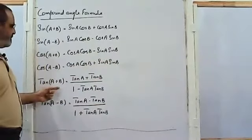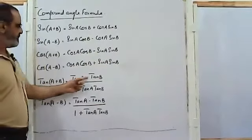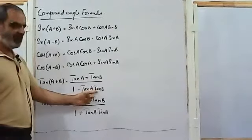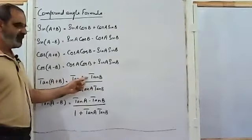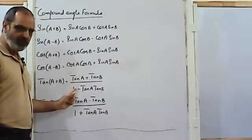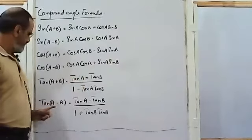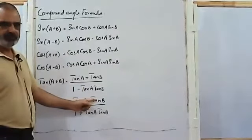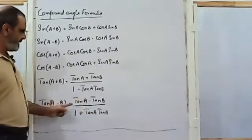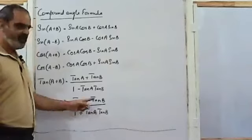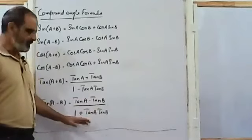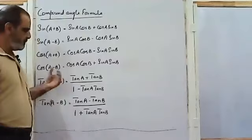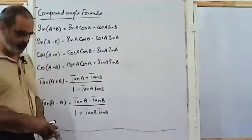Tan(A plus B) will be (tan A plus tan B) over (1 minus tan A tan B). For the plus sign we have a plus sign in the numerator and a minus sign in the denominator. Tan(A minus B) will be (tan A minus tan B) over (1 plus tan A tan B). We will make use of these formulas today.